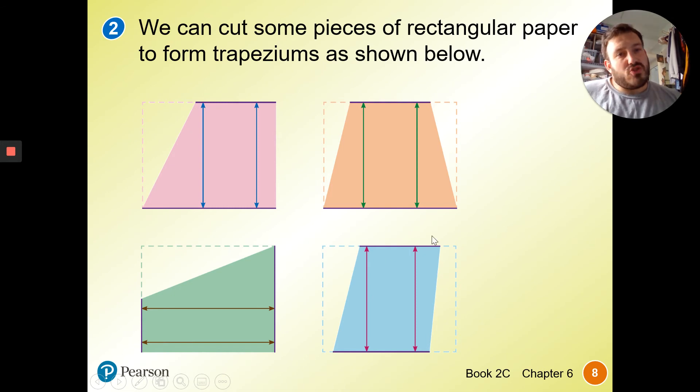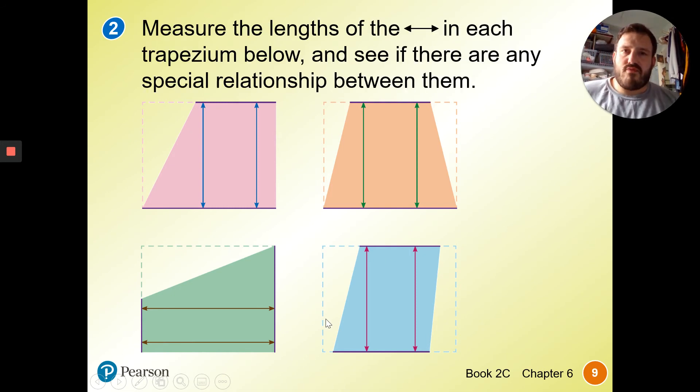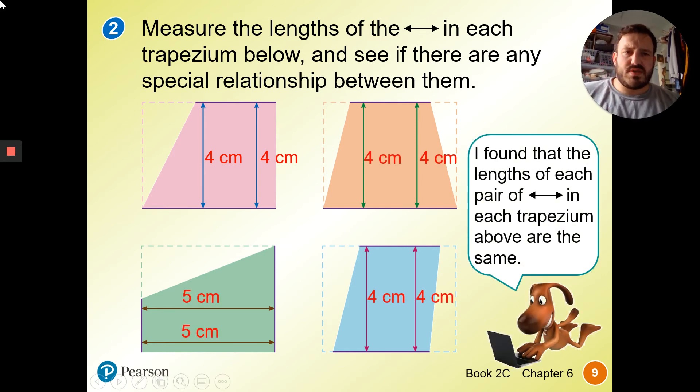But we know that it's got two unequal sides, so it's not a rhombus. So measure the lengths of the arrows in each trapezium, and we can see what the special relationship is. Ah, so from top to bottom, they're all the same size. I found the lengths of each pair of arrows in each trapezium above are the same. That's interesting.